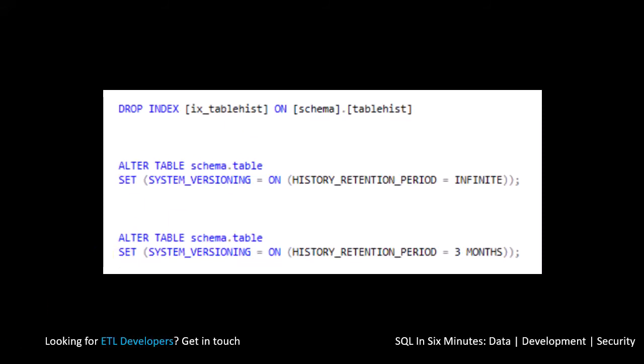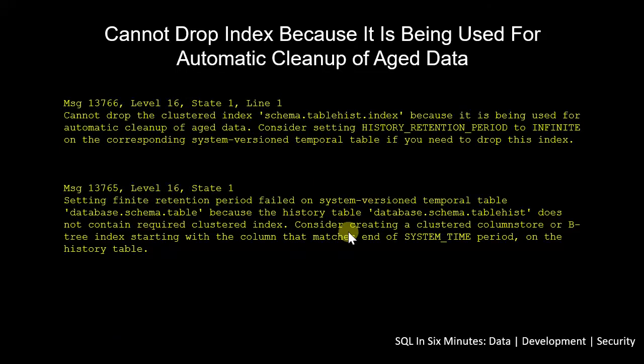The same is true if we invert the problem: if we have it set to infinite and then want to go back to a restricted period of time but we don't have an index, how is it going to know which records are too old and are going to fall off? How is it going to track that information? That's what's going on with these two errors.